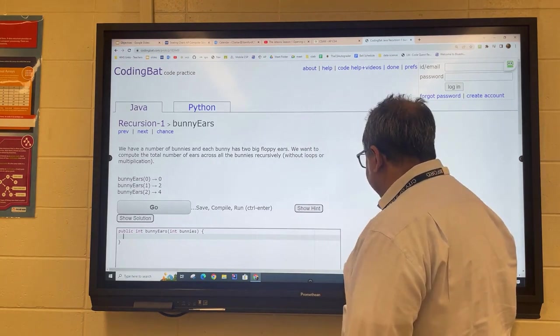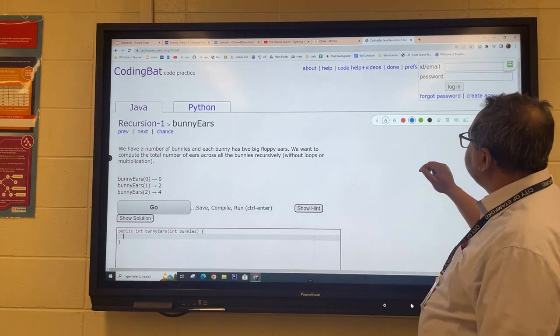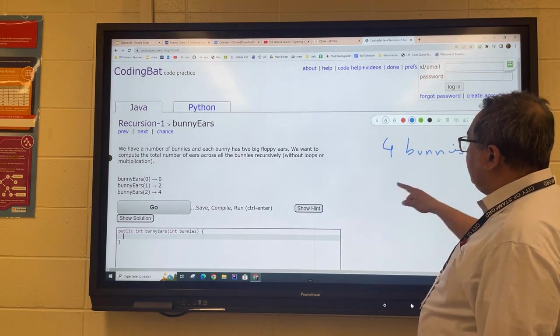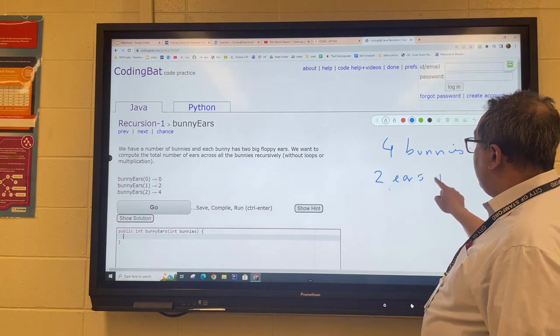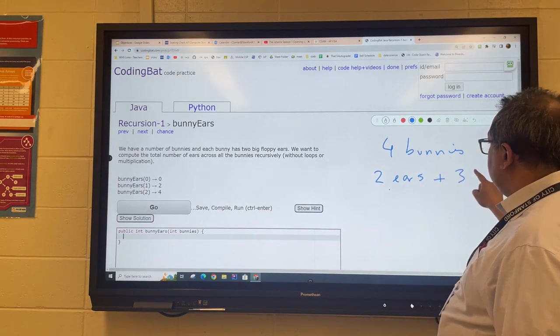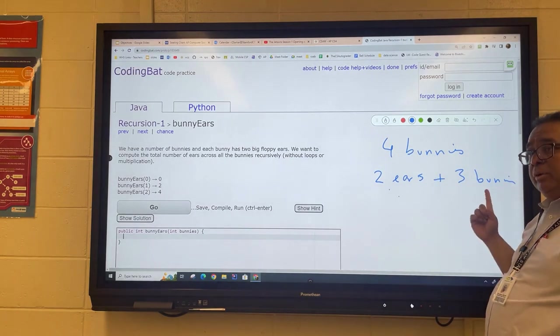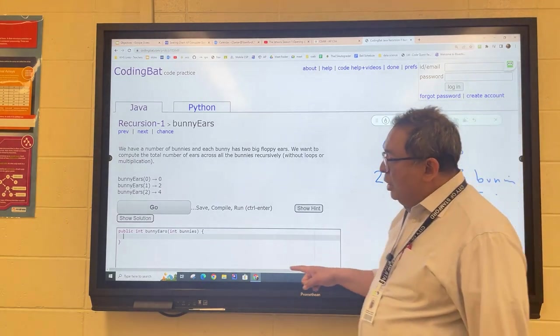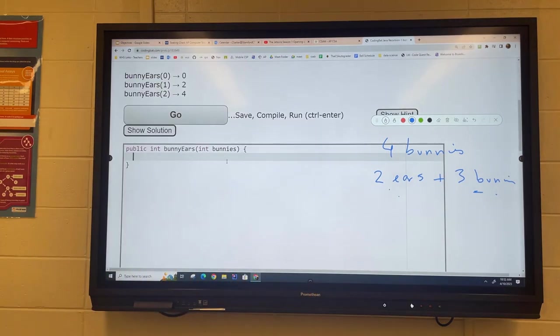What we're going to do is we're going to say that, let's say we have four bunnies, right? We'll say that the first bunny has two ears, right? The first bunny has two ears. And then we still have to do the processing for three more bunnies. If we have four bunnies, the first one has two ears, and then we'll repeat the process for the remaining bunnies. So here, what we'll say is, let me see if I can blow this up for you a little bit. So the first bunny, the current bunny, has two ears.